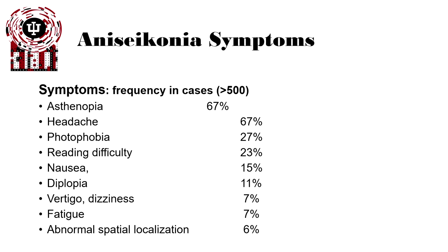Anisoconia symptoms are very similar to anisometropia, since they are highly related. Asthenopia is the primary complaint, followed by headaches, photophobia, and reading difficulty. In some extreme cases, you can have nausea, diplopia, vertigo, fatigue, and some abnormal spacing issues.